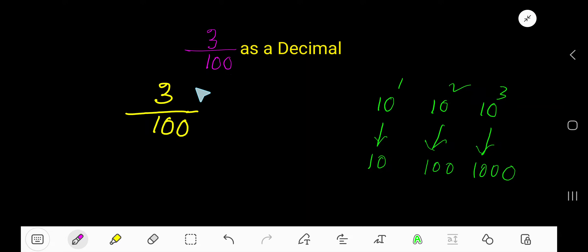Three over a hundred as a decimal. To divide a whole number, we need to divide this whole number by this denominator. Hundred, ten, hundred, thousand - these are called powers of ten. To divide a whole number by a power